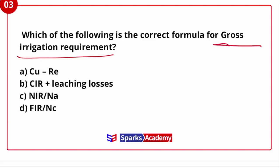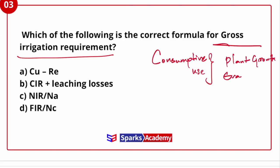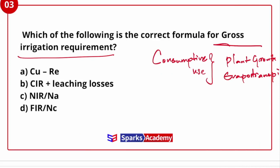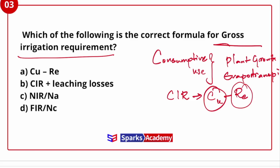The first component is the plant's consumptive use — the water consumed for plant growth. Then we have evapotranspiration, which combines evaporation and transpiration. When there is no rainfall, evapotranspiration via plant growth gives us consumptive use. The concept of irrigation requirement considers rainfall. If you want to supply water directly to the plant, then CIR is equal to CU minus REA.